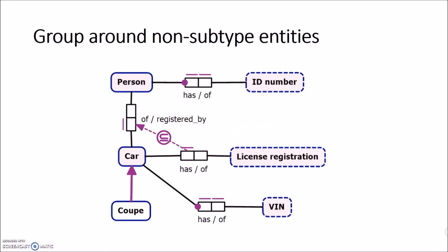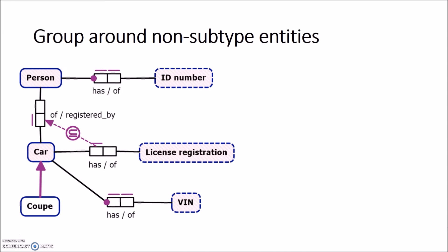Let's start with an example — this is an ORM schema that we will convert to a relational database schema. Starting with 'ID number': mark it as grouped and create a table with name ID number. This object type has one fact type linked to it — to 'person' — but it's not mandatory on the side of ID number, so we don't take this fact type into account. Furthermore, ID number doesn't have any fact types left linked to it, so we are done for this table.